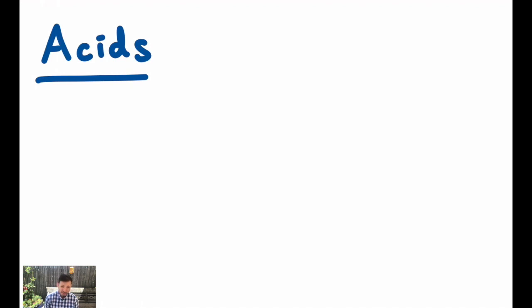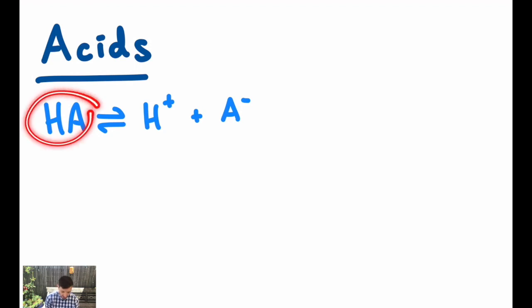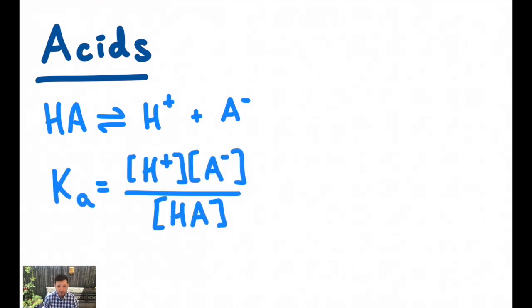An acid is a species that can contribute an H+ ion, such as the generic formula HA dissociating to give H+ and the conjugate base A-. We can talk about this equilibrium in terms of its acidity constant Ka, that's just the equilibrium constant, the concentration of H+ and A- multiplied together, divided by the concentration of HA.